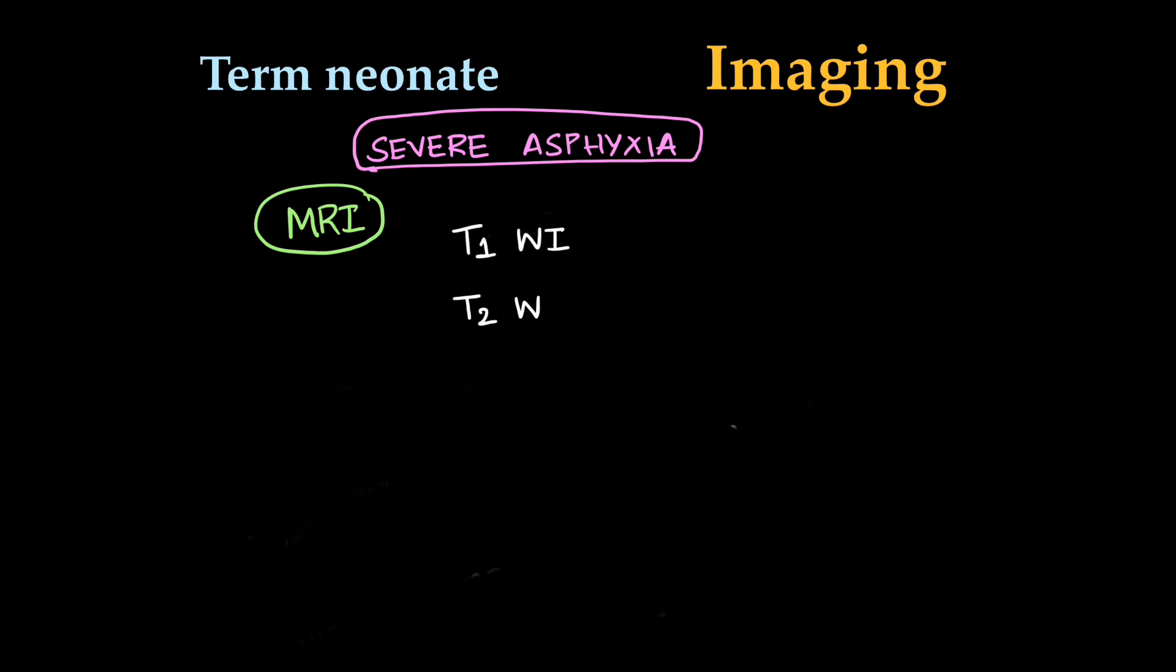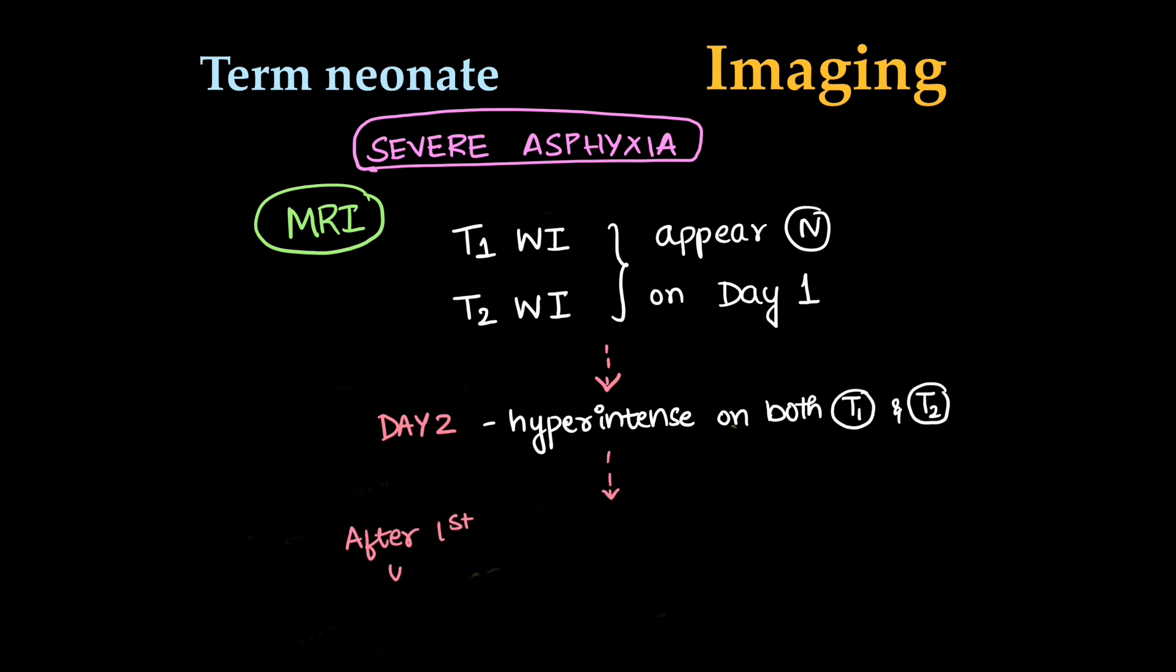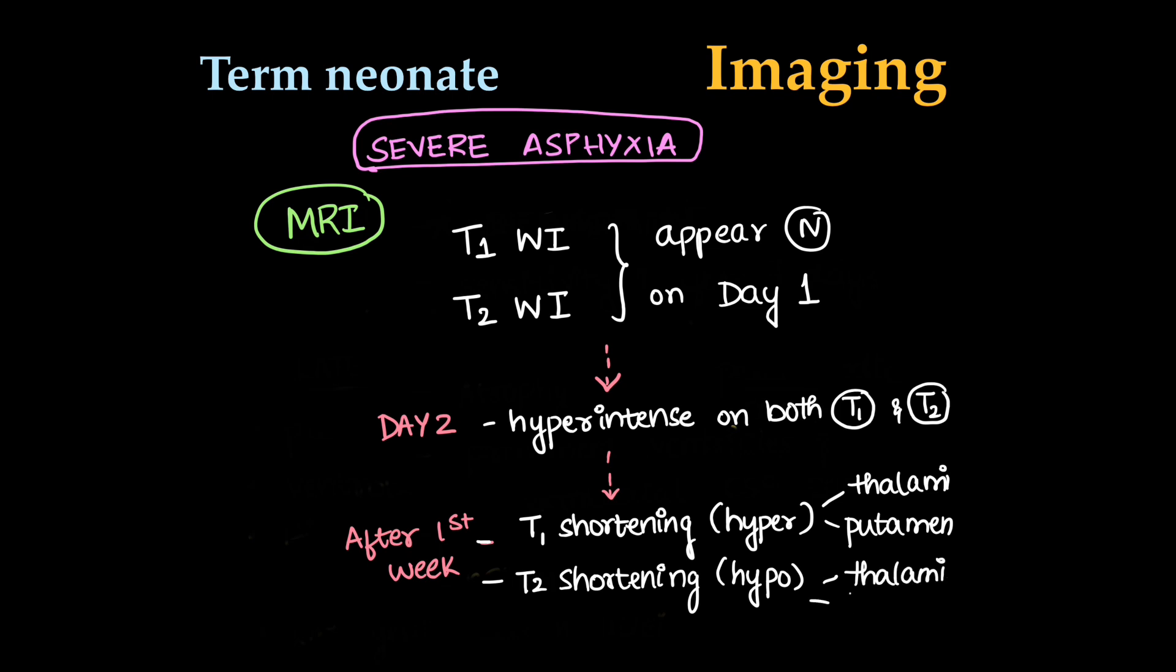Other sequences like T1 and T2-weighted images will show normal on day 1. Findings can be found on day 2 where there will be hyperintensity on both T1 and T2 in affected areas. After first week, T1 shortening occurs, hyperintensity in thalami and putamen, and T2 shortening, hypointensity in thalami, basal ganglia, and perirolandic cortex.